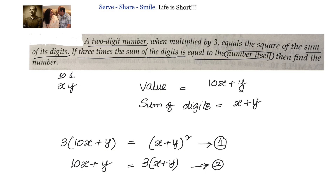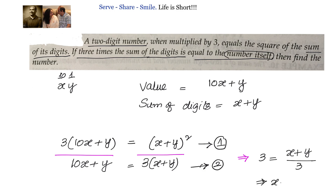Now we have to find out what is that 2-digit number. We will try to divide these 2 equations and see what happens. When we do that, we will get 3 equals to (x + y) divided by 3. That means x plus y equals to 9. So we got one equation which says that the sum of the digits equals 9.